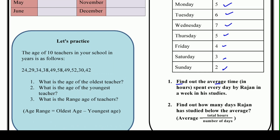The first question is: find out the average time in hours spent every day by Rajan in a week in his studies. The formula is: total hours divided by number of days. The number of days is 7 since there are 7 days in a week. The second question asks: find out how many days Rajan has studied below average — that is, on how many days did he study less than the average?